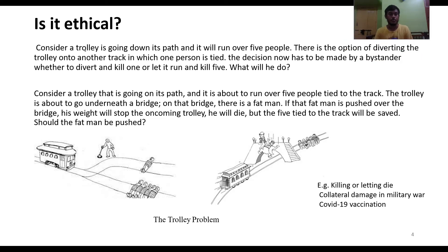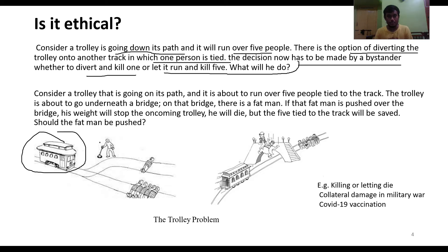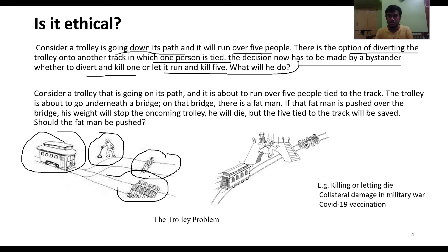In the trolley problem, consider a trolley going down its path that will run over five people. There is the option of diverting the trolley to another track where one person is tied. The bystander must decide: divert and kill one, or let it run and kill five. You can see in the diagram that five people are tied to one part of the track and one person to the other.